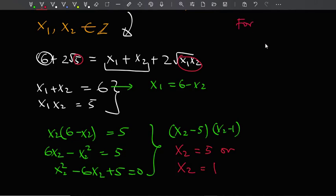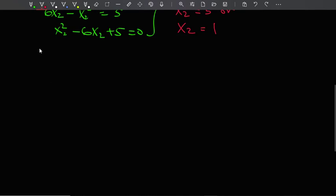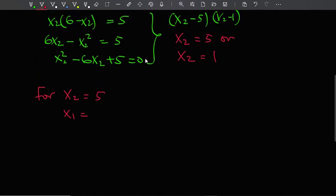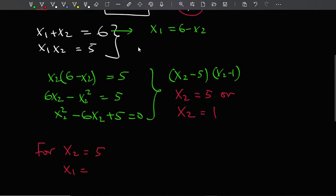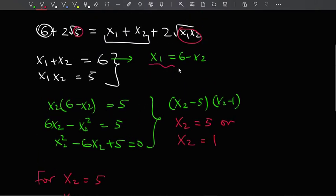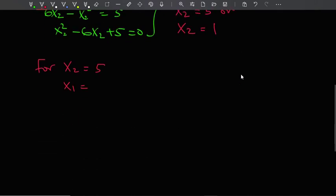Okay, so for x2 equals 5, x1 from this equation here—where is that? Oh, I just have to go back up. Okay, from here, x1 is 6 minus x2. So you'll have 6 minus 5. That's going to be positive 1.